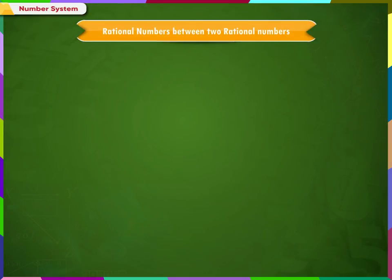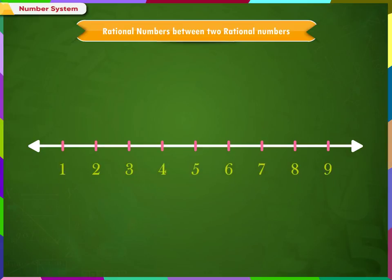Rational Numbers Between Two Rational Numbers. Let us try to list the natural numbers between 4 and 7. 5 and 6 are the only two natural numbers between 4 and 7.